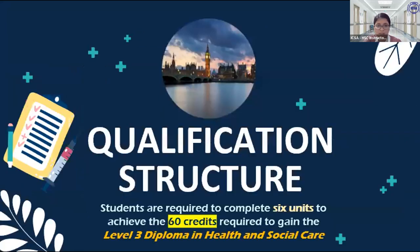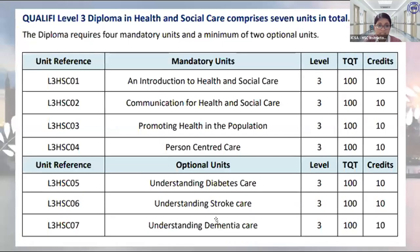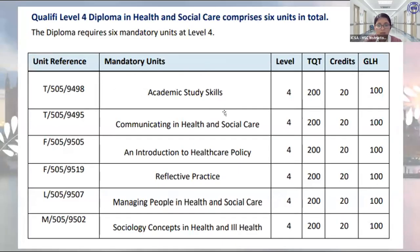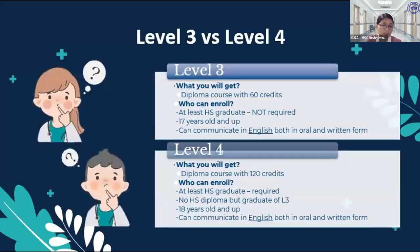For Level 3's qualification structure, you need to pass six units worth 60 credits: Introduction to Health and Social Care, Communication for Health and Social Care, Promoting Health in the Population, and Person-Centered Care, plus two optional units chosen from Understanding Diabetes Care, Stroke Care, or Dementia Care. For Level 4, you complete six units for 120 credits: Academic Study Skills, Communicating in Health and Social Care, Introduction to Healthcare Policy, Reflective Practice, Managing People in Health and Social Care, and Sociology Concepts in Health and Ill Health.